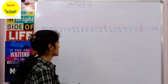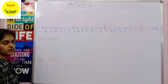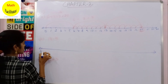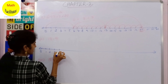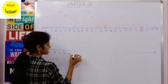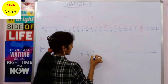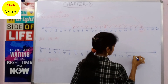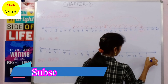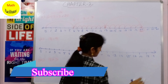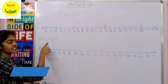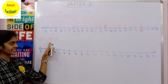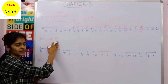Now let us see the second problem: 18 minus 9. Firstly let us draw the number line: 0, 1, 2, 3, 4, 5, 6, 7, 8, 9, 10, 11, 12, 13, 14, 15, 16, 17, 18, 19, and so on. The first number is 18, and you have to subtract 9 from 18.